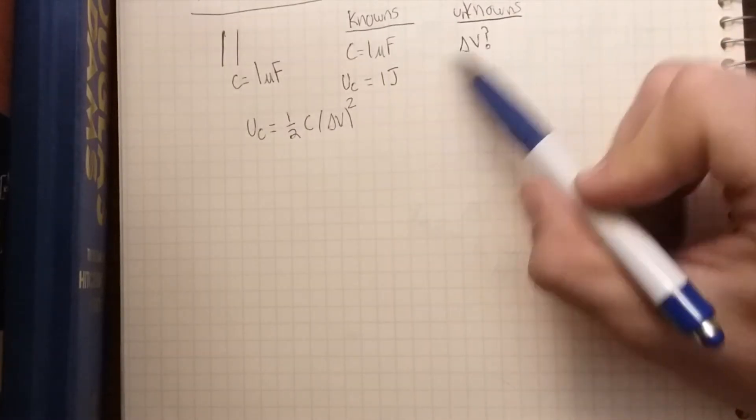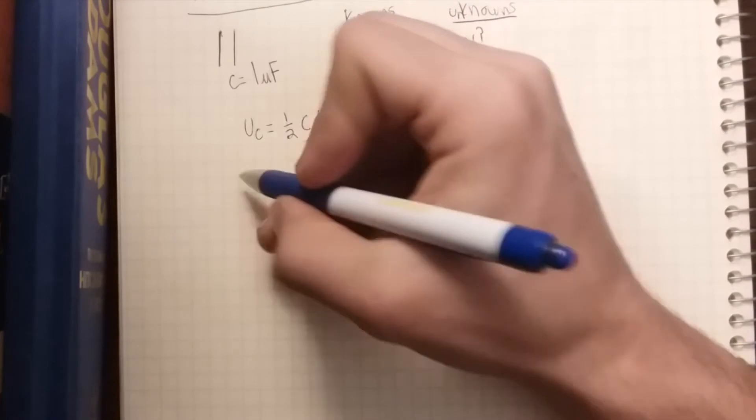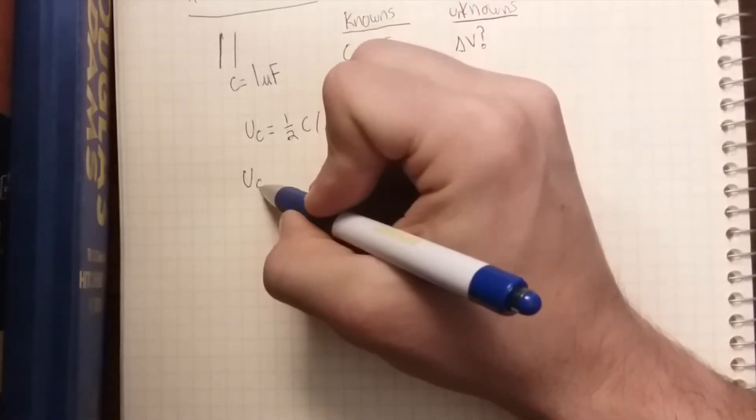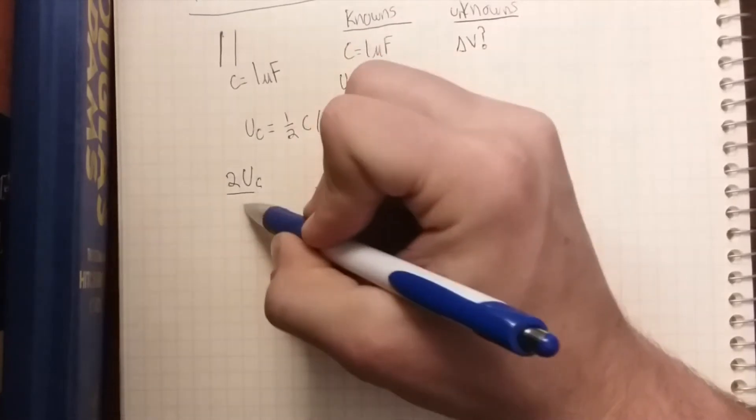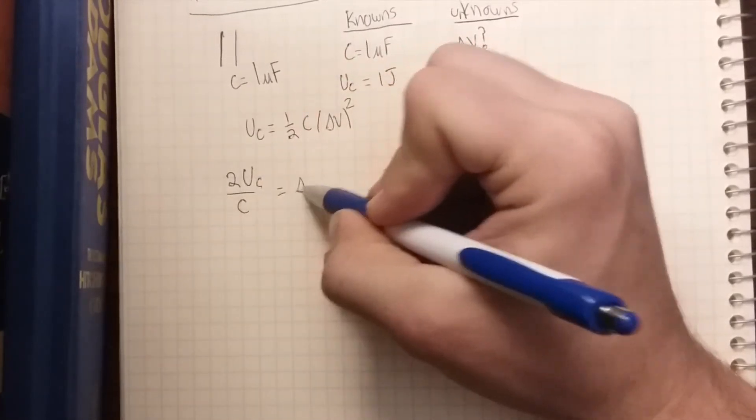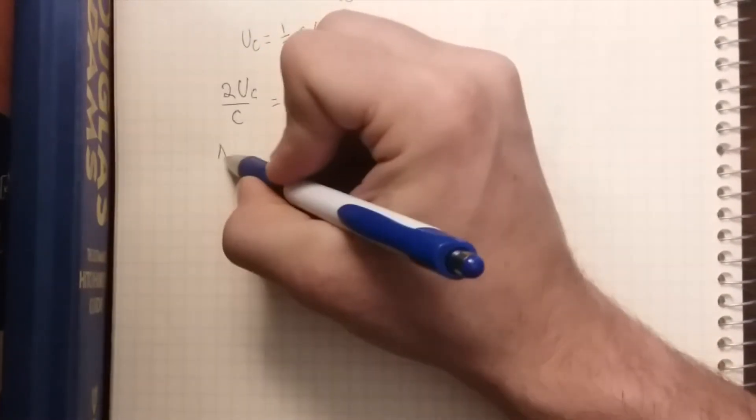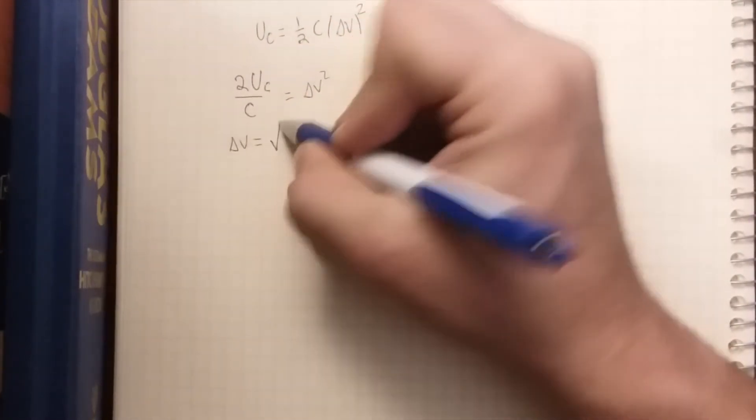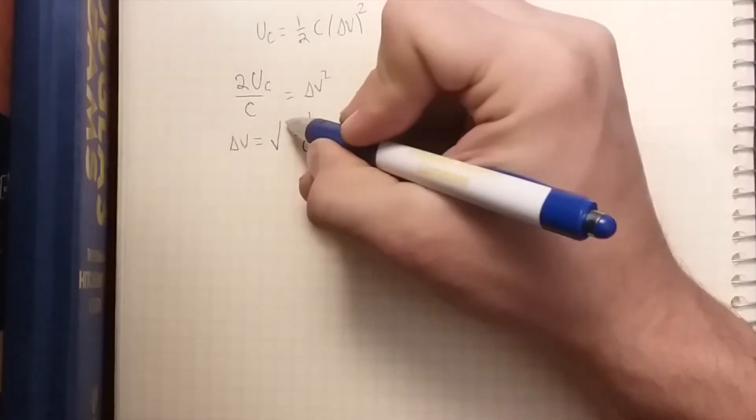Now, if we want to find delta V, we have to solve this equation for delta V. First we move everything but delta V to the left side, so we multiply by 2, divide by capacitance - this equals delta V squared. Then we take the square root of both sides, so we get delta V equals square root of 2 times potential energy over capacitance.